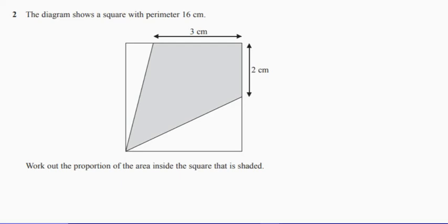Question two. The diagram shows a square and it's got a perimeter of 16. So just think about what that tells me. It tells me the length of all the sides of the square must be four.